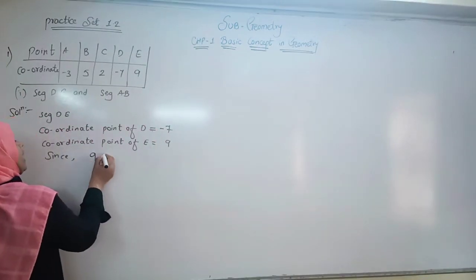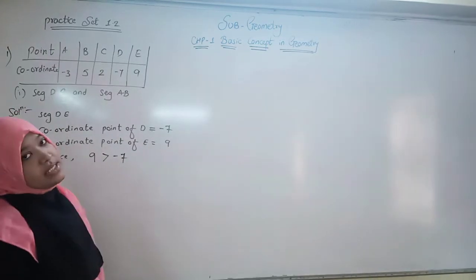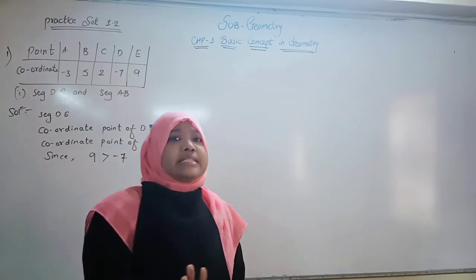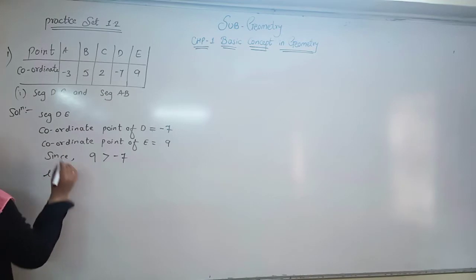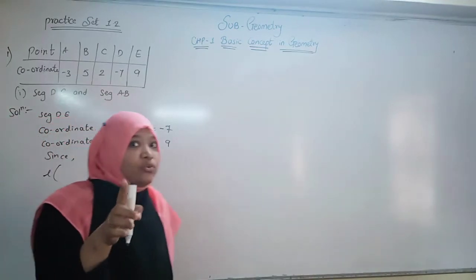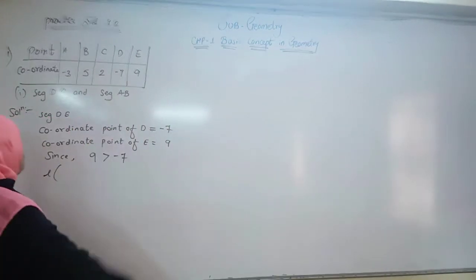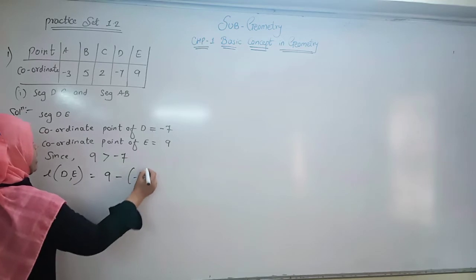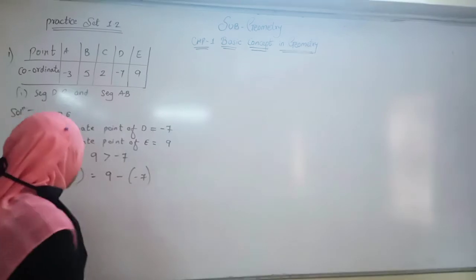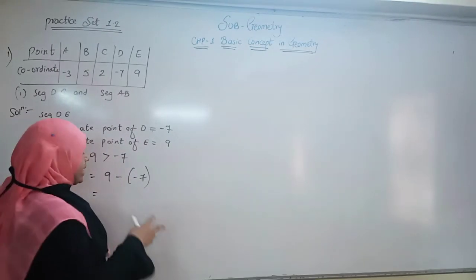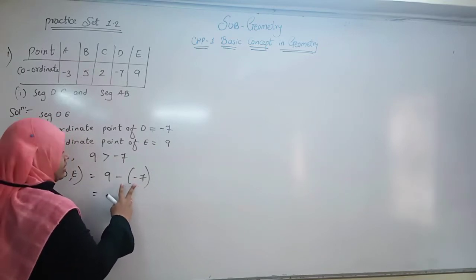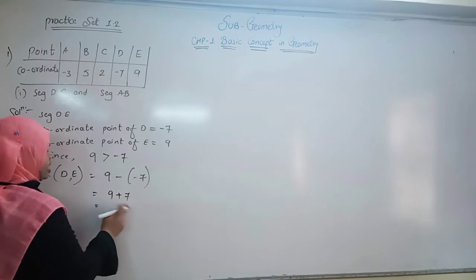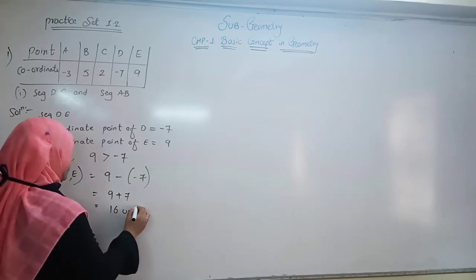So how are we going to write the length? We find the length of DE by doing bigger number minus smaller number: 9 minus minus 7. First we calculate the sign — minus minus becomes plus. So it becomes 9 plus 7, which equals 16 units.